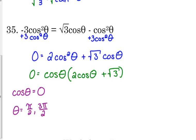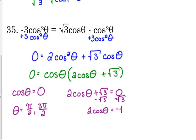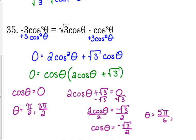The other piece: two cosine of theta plus the square root of three equals zero. We need to isolate the cosine, so subtract the square root of three and divide by two. Cosine equals negative square root of three over two. Cosine is negative where x is negative — that's the second and third quadrants. It's equal to square root of three over two at pi over six, so that would be five pi over six and seven pi over six.